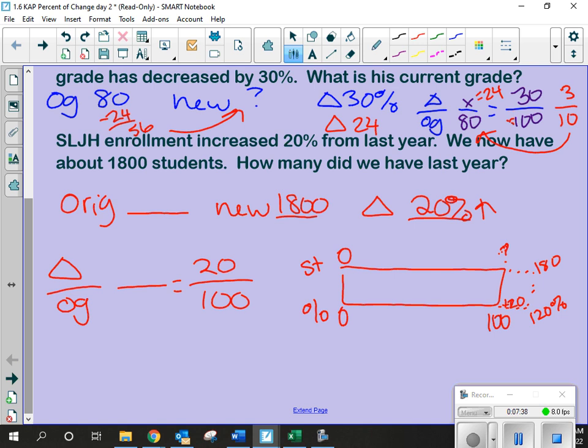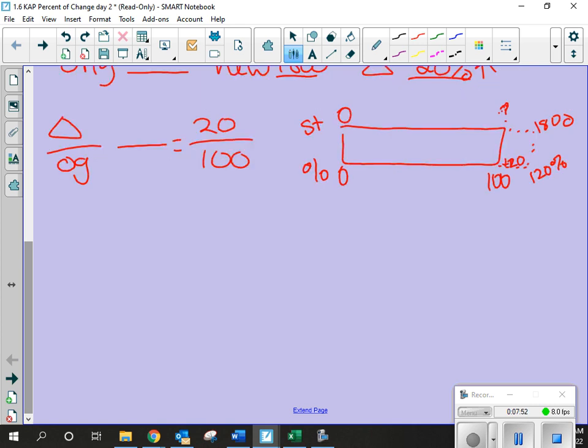I'm adding 20%. And so that new percent would be, it's going to be representative of 120%. Okay? Do I know my new amount of students? What is that going to be? Yeah. It's 1,800. But again, I don't know this change. I don't know that original amount. Okay? So, it's a little tricky. And so we actually have to go back to our roots of proportions.